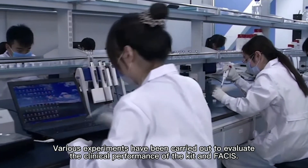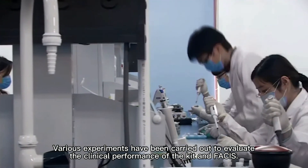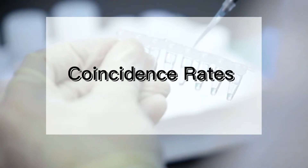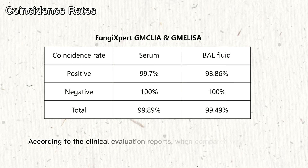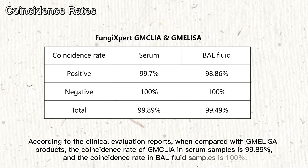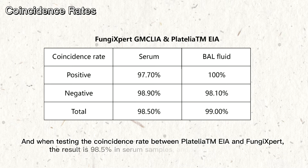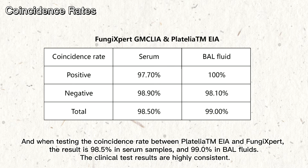Various experiments have been carried out to evaluate the clinical performance of the kit and FASIS. In addition to the clinical evaluation reports, when compared with GM ELISA products, the coincidence rate of GM CLIA in serum samples is 99.9% and the coincidence rate in BAL fluid samples is 100%. When testing the coincidence rate between EIA and Fungi Expert GM CLIA, the result is 98.5% in serum samples and 99.9% in BAL fluids.